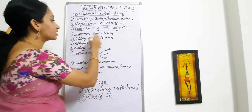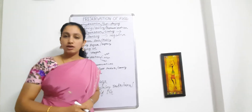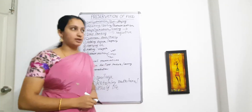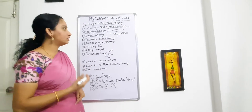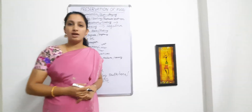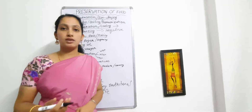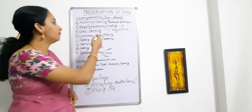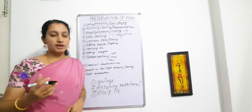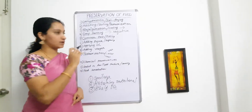Next is salting, pickling, or the pickling method, which involves adding common salt. Common salt inhibits or prevents the growth of microorganisms. This is one of the oldest physical methods, and it allows you to preserve food for a longer time. Examples include some vegetables, pickles, and even some fruits that are pickled. Microorganisms cannot survive in that salty habitat.